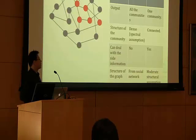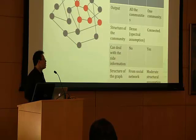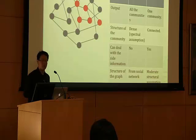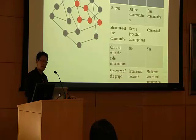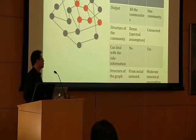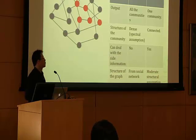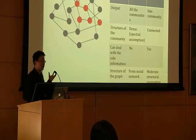Second, it's about the assumption we make over the structure of the community. In most existing work, much stronger assumptions are made — for instance, that interaction within the community is much denser than interaction across the community. Here we make a much weaker assumption: we just assume that the subgraph induced by the community is connected.